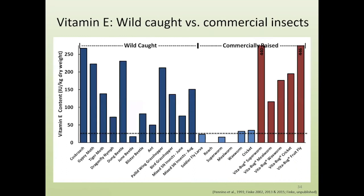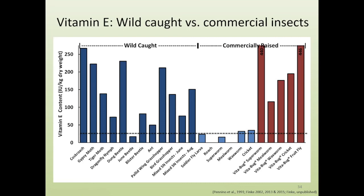Vitamin E shows a similar story to carotenoids. Wild-caught insects include some with very high vitamin E levels, but commercially produced insect species are fairly low in vitamin E — probably because their diets were never optimized for this. However, if you provide insects with a diet rich in vitamin E, you can get a far higher concentration in the insects, and therefore deliver more vitamin E to the consuming animal. It is possible to enrich insects with vitamin E through diet.